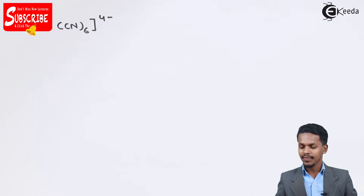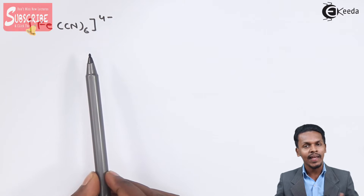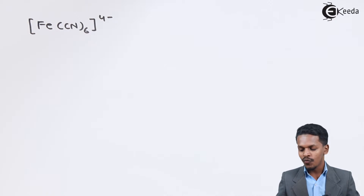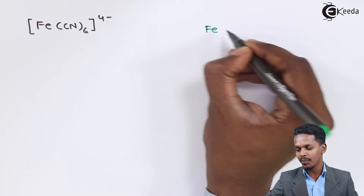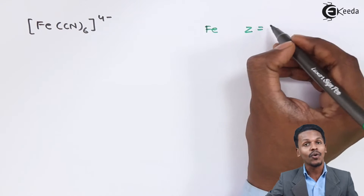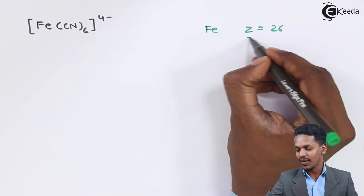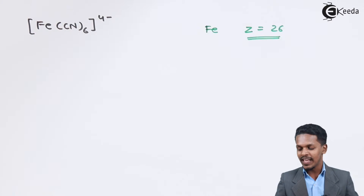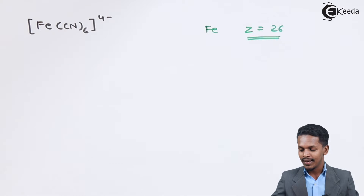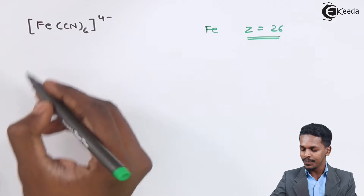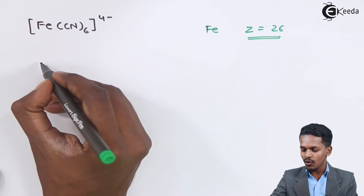Here we have a complex ion — it is an ionic complex. First we need to calculate the oxidation number. The central metal atom is Fe (iron), which has an atomic number Z = 26. We have the value of Z; now we need to calculate X and Y to find the Effective Atomic Number.